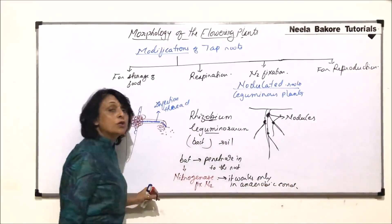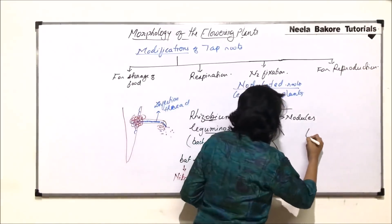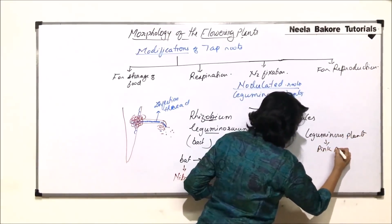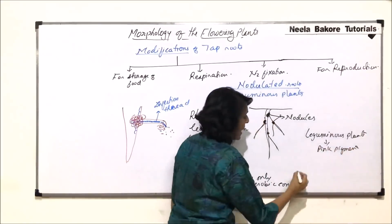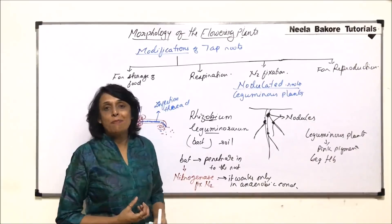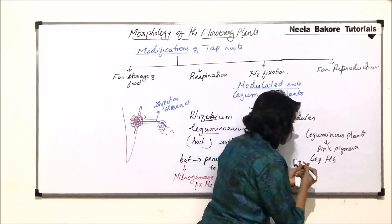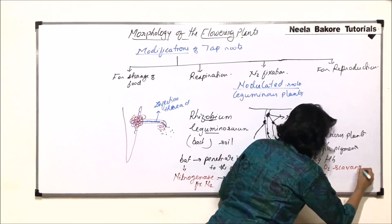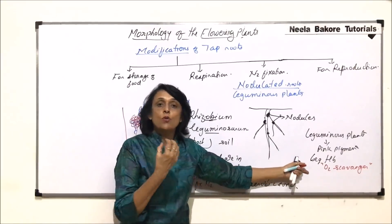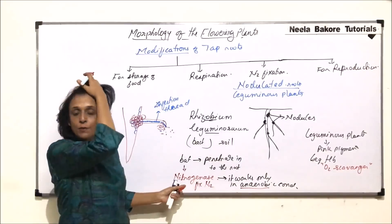That means oxygen should not be there; then only this enzyme is going to work. In leguminous plants, there is a pink pigment which is known as leghemoglobin — leg for leguminous and hemoglobin because it has the capacity to bind with oxygen like hemoglobin has. So this leghemoglobin acts as an oxygen scavenger. That means it is going to bind with all available oxygen, and if all that oxygen goes away, the condition becomes anaerobic, and then this nitrogenase will be able to fix nitrogen.